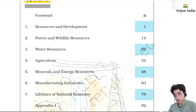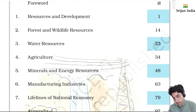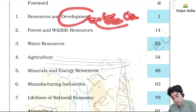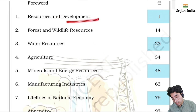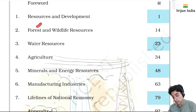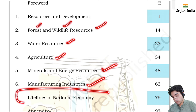Now we are going to Class 10th. The first chapter is Resources and Development. Development depends on resources. Forest and wildlife are also very large resources. Water is again a resource. Agriculture, minerals and energy resources, manufacturing industries, and lifeline of national economy.